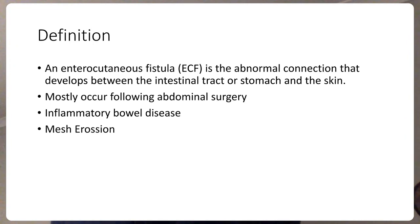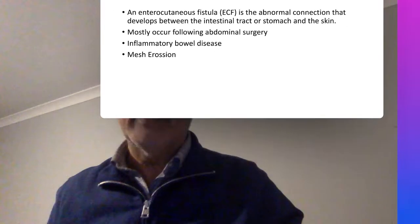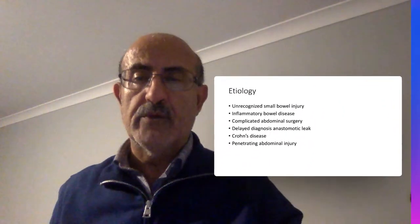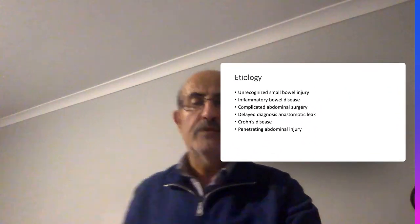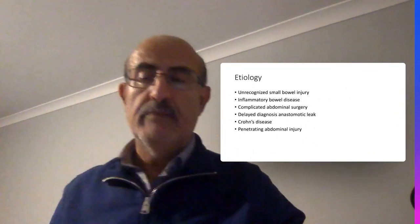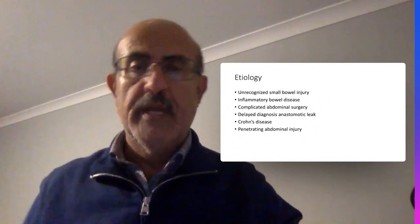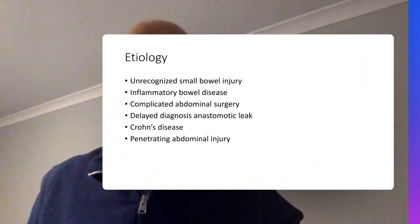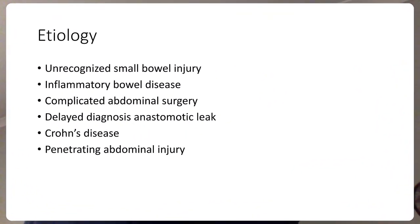Another reason for fistula formation is mesh that surgeons apply to repair ventral hernias. Mesh is a foreign body — polypropylene-based — and it can invade the small intestine, leading to a fistula months after the hernia repair.